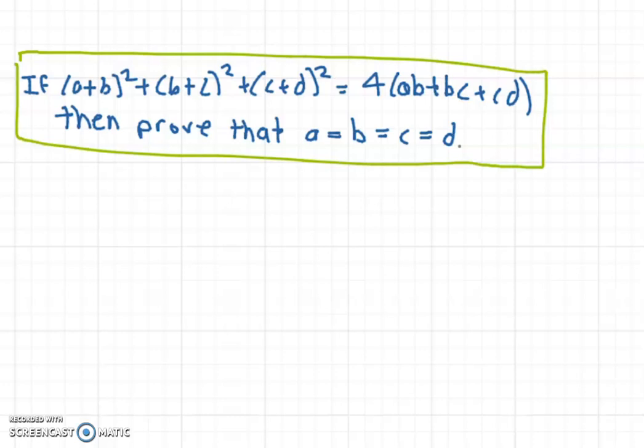Today I'll be proving the following algebra question. If (a+b)² + (b+c)² + (c+d)² equals 4 times (ab + bc + cd), then we'll have to prove that a, b, c, d are all equal to each other.